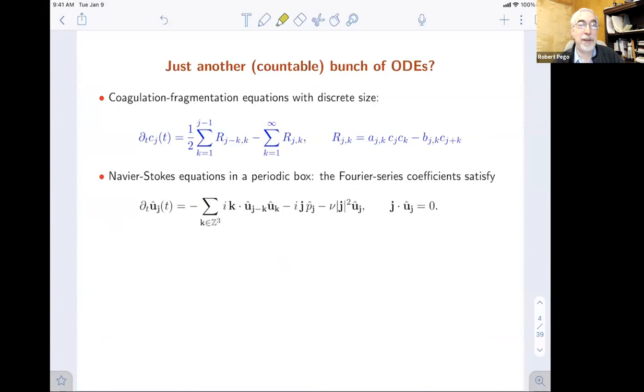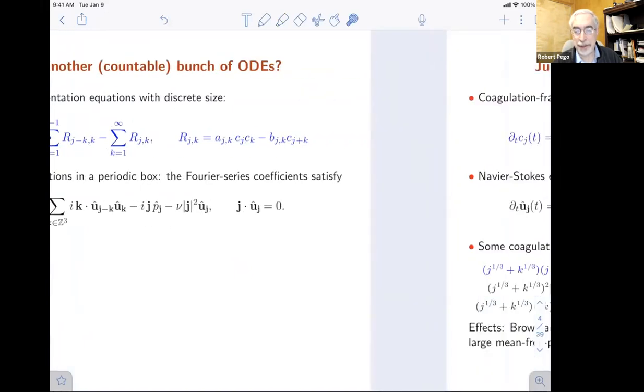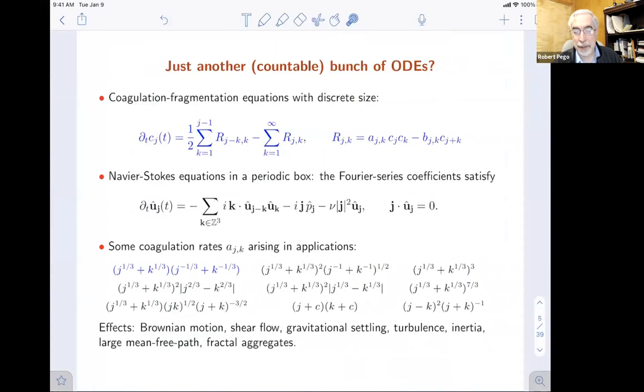So I describe them as ODEs, but there's infinitely many of them. So the mathematical phenomena become not like ODEs. Navier-Stokes equations in a periodic box become ODEs. We really have infinite dimensional phenomena here, and that's where the issues become interesting. Some of the coagulation rates that arise in applications are indicated down here, a great variety appear in many different areas of physics.